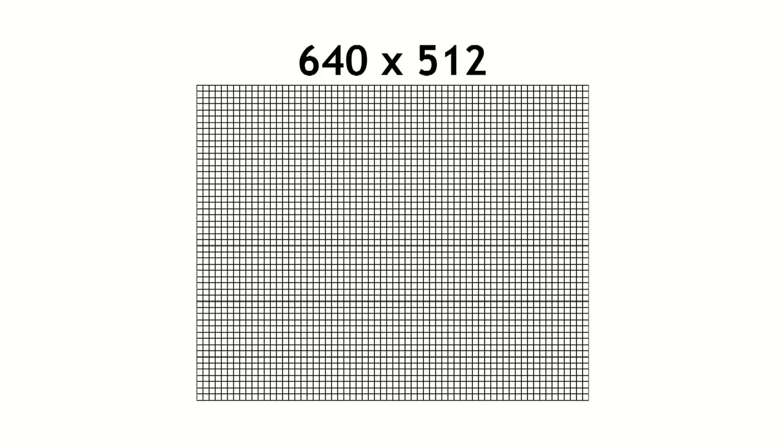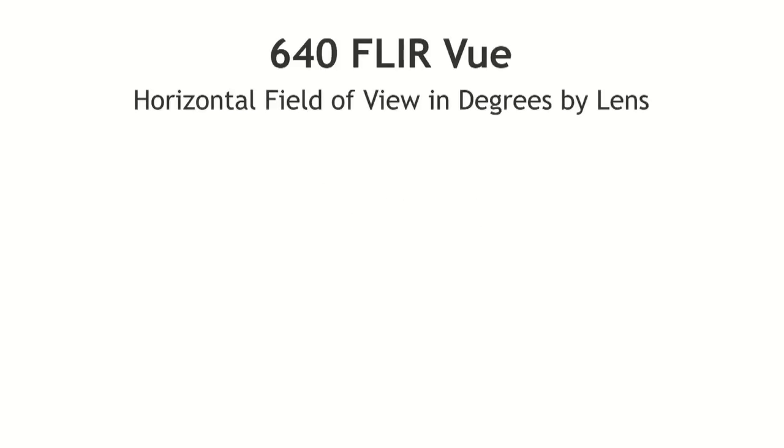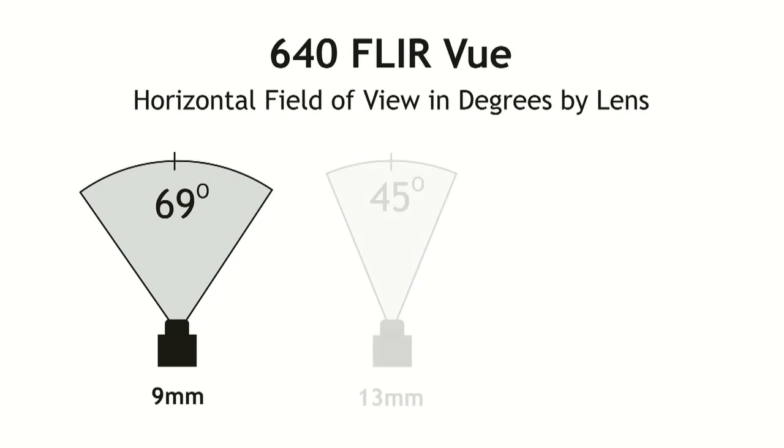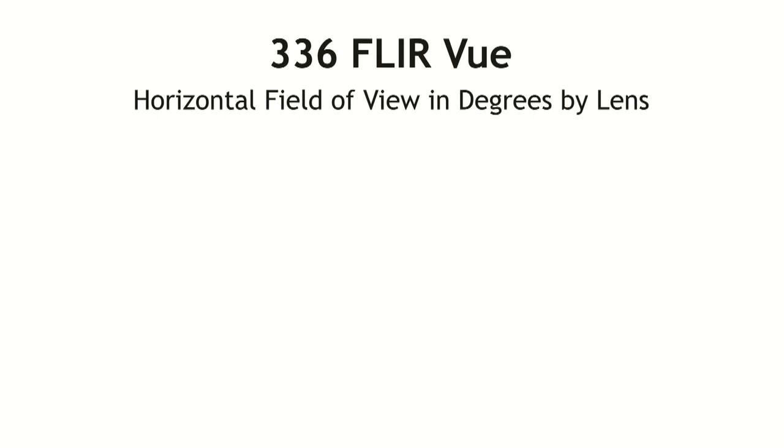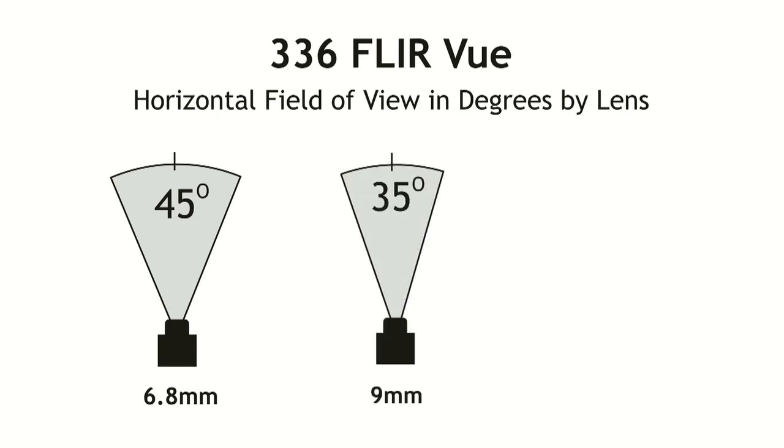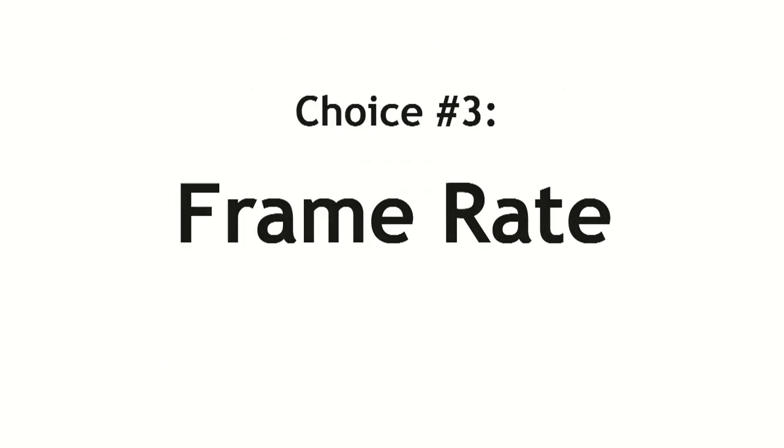There are three important options to consider when you're choosing a FLIR VUE PRO. The first is what resolution you want for the camera. The second is what lens you want to put on it. The third is what frame rate you want to capture at. In terms of resolution, you've got two choices: 640 pixels across or 336 pixels across. On the 640 pixel version there's a nine millimeter lens available which has a 69 degree field of view, a 13 millimeter lens which has a 45 degree field of view, and a 19 millimeter lens which has a 32 degree field of view. For the 336 pixel camera there's a 6.8 millimeter lens which has a 45 degree field of view, a 9 millimeter lens which has a 35 degree field of view, and a 13 millimeter lens which has a 25 degree field of view.